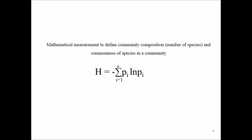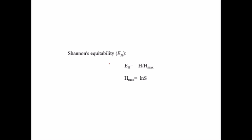What does it mean? It is the mathematical measurement to define the community composition — the number of species and the commonness of species in a community. This is the general formula for the Shannon index. You can simply apply this formula to calculate it. There is also an equitability formula: it is the Shannon index divided by the maximum Shannon index, where the maximum Shannon index equals ln(S), and S is the total number of species in that community.